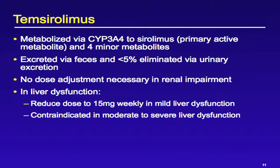For Temsirolimus, this is metabolized by the liver by CYP3A4 and for minor metabolites, excreted via feces, with less than 5% eliminated via urinary excretion. There is no dose adjustment necessary in renal impairment, though it has not been studied in patients on dialysis. For liver dysfunction, it is contraindicated in moderate to severe liver dysfunction.